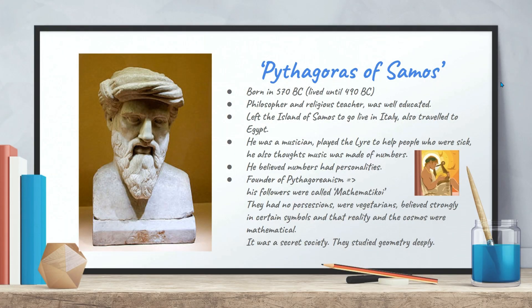So who is Mr. Pythagoras? Well, Mr. Pythagoras was Pythagoras of Samos, and Samos is an island in Greece. He was born in 570 BC and lived until 490 BC, so he lived for about 80 years. He was a philosopher and a religious teacher. He was very well educated.